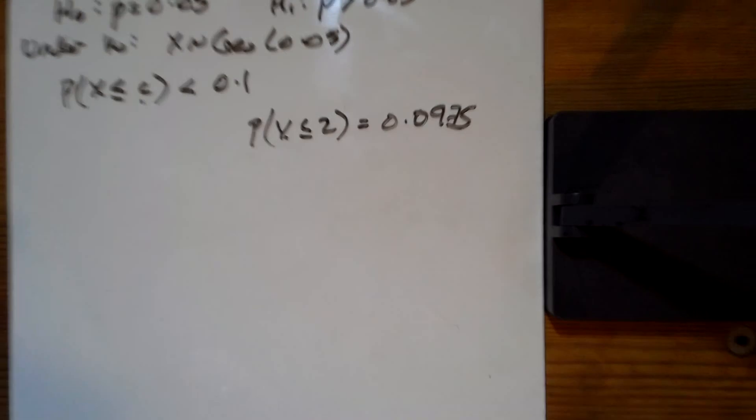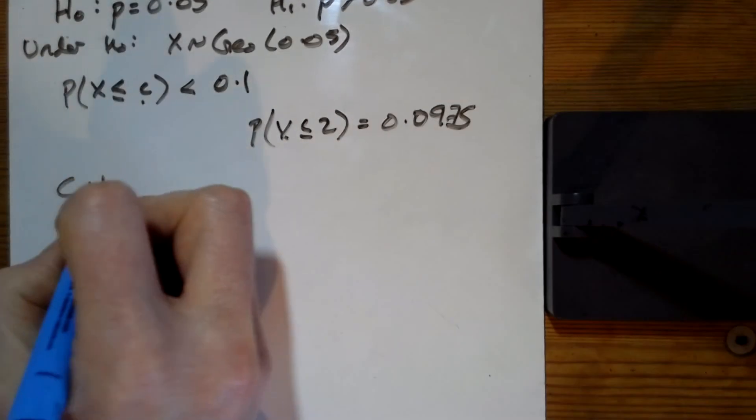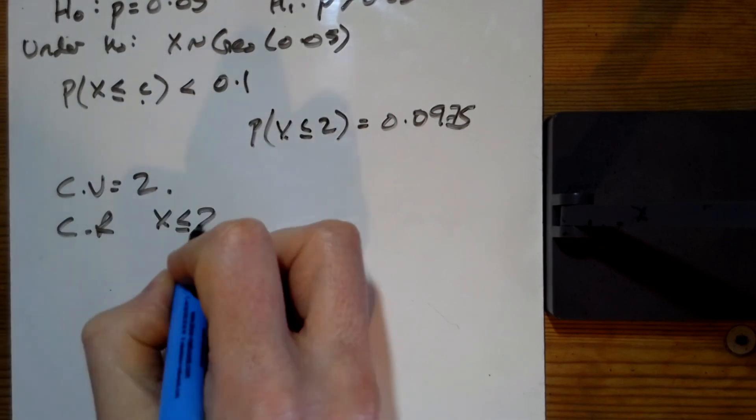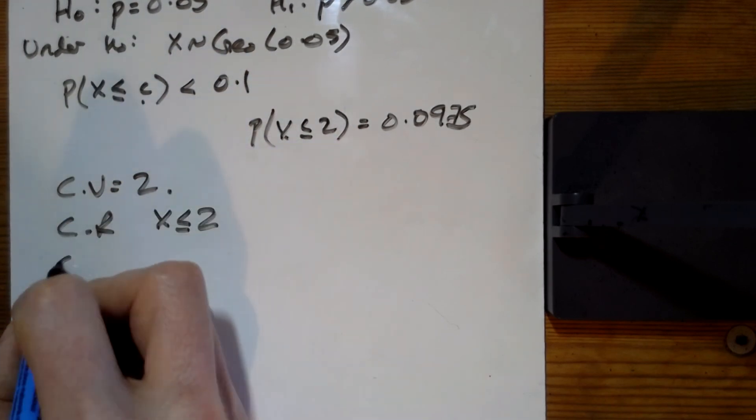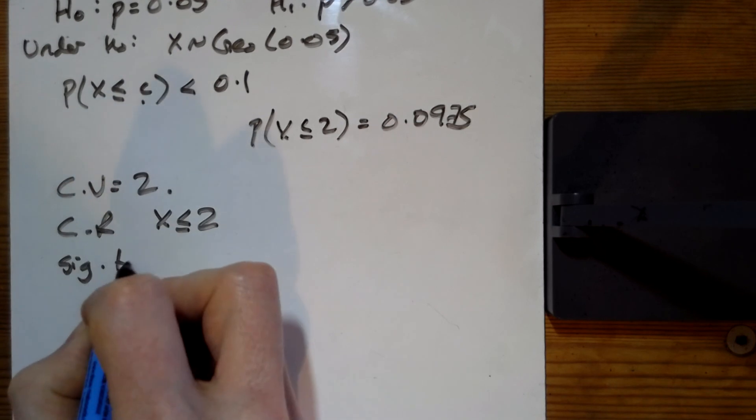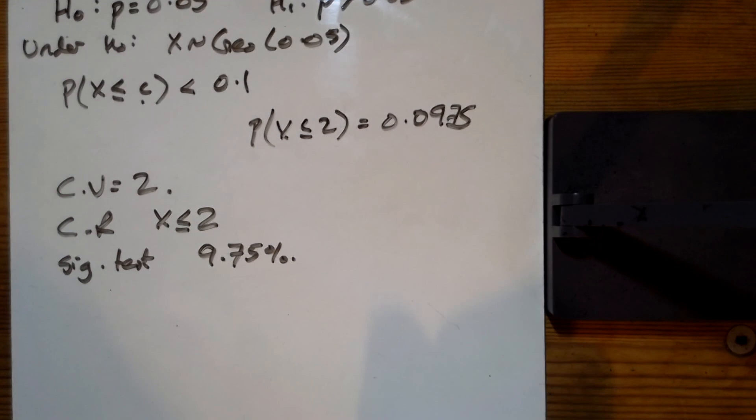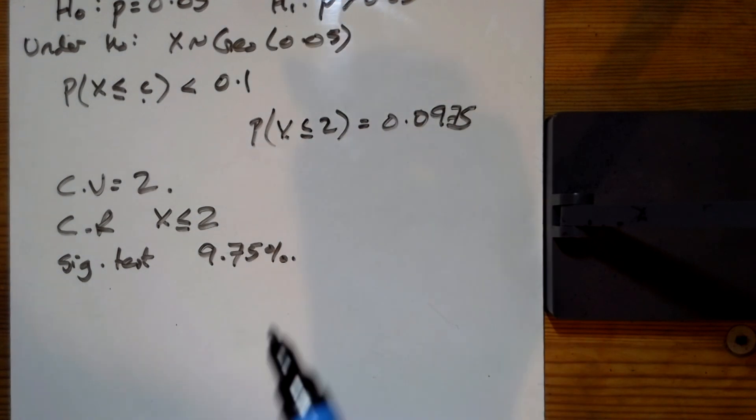So from that, I know that the critical value equals 2. The critical region is X is less than or equal to 2. And the significance value of the test is equal to 9.75%, not the 10% we were looking for.